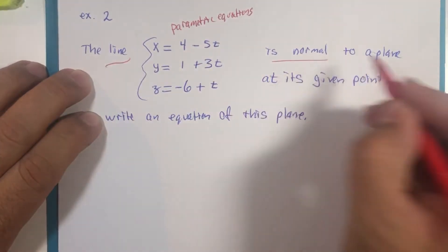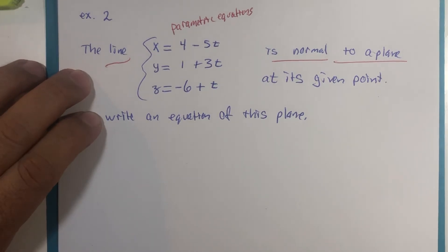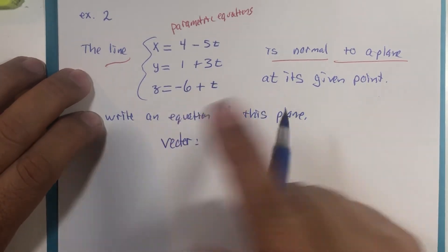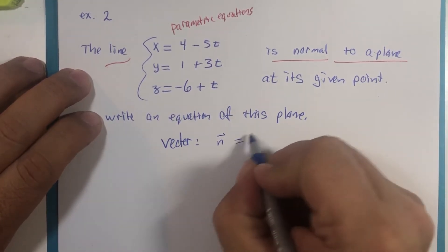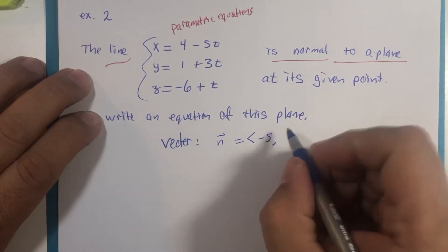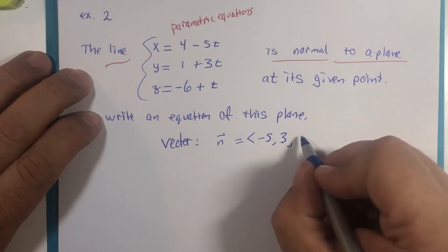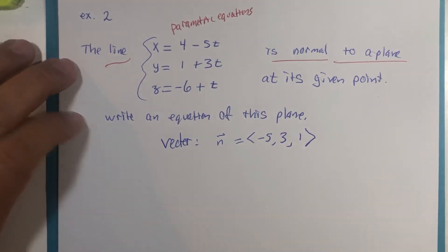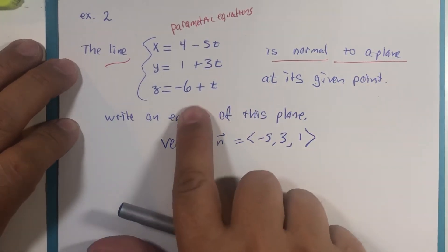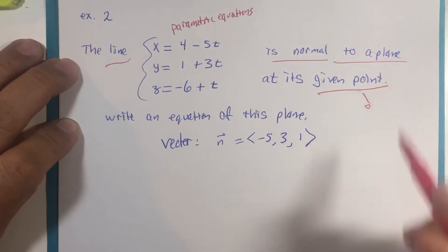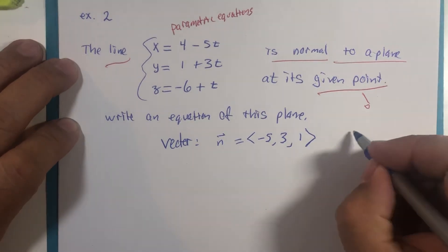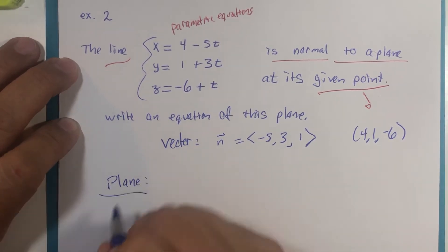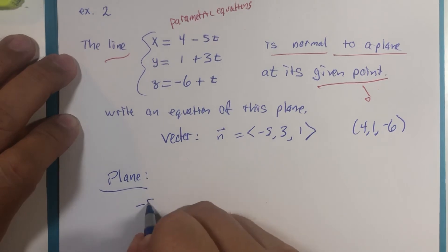Suppose this line is normal to the plane. The direction vector given in this line has X decreasing by 5, Y increasing by 3, Z increasing by 1. To write the equation of the plane we need that vector and a given point. The given point for this line was (4, 1, -6).